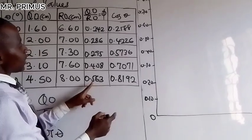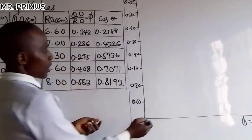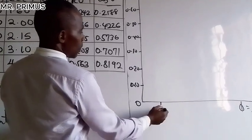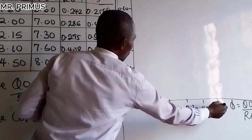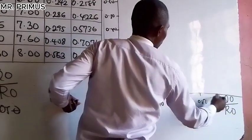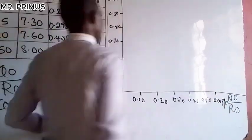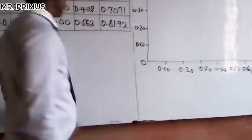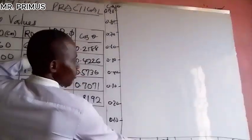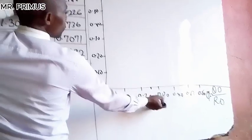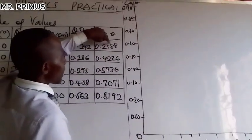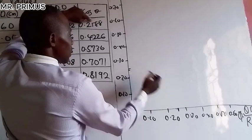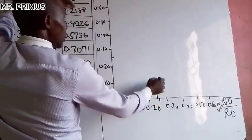On the horizontal axis we go from 0.10, 0.20, 0.30, 0.40, 0.50, 0.60. The lowest value is about 0.24 and the highest is around 0.56. The first point: QO/RO is 0.24, cos(theta) is 0.2588 — approximately 0.26 — so we trace it up to plot here.